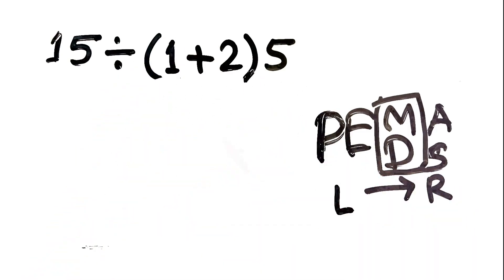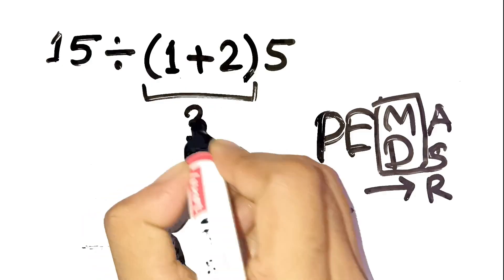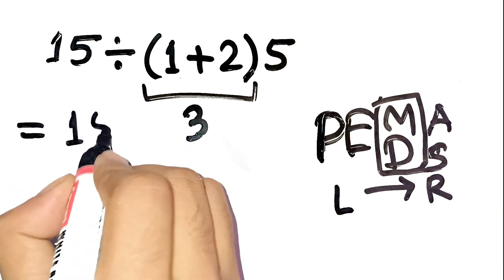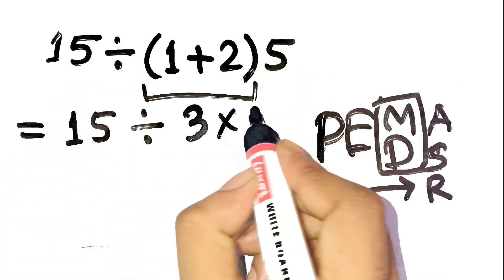So first, handle the parentheses. 1 plus 2 equals 3. Now the expression looks like 15 divided by 3 times 5.